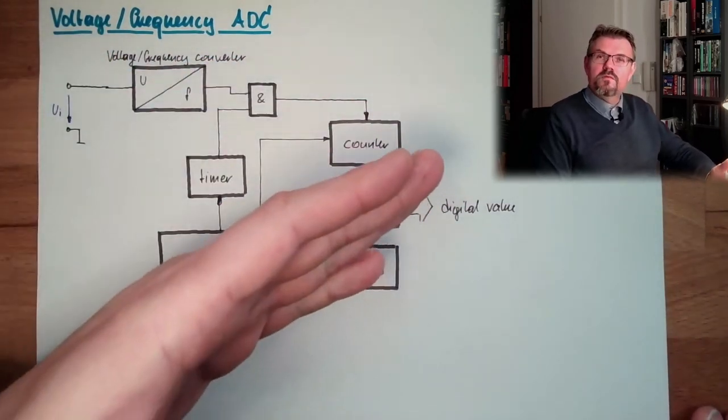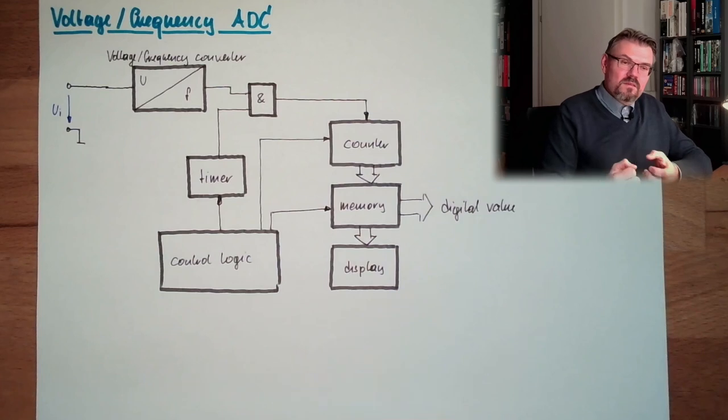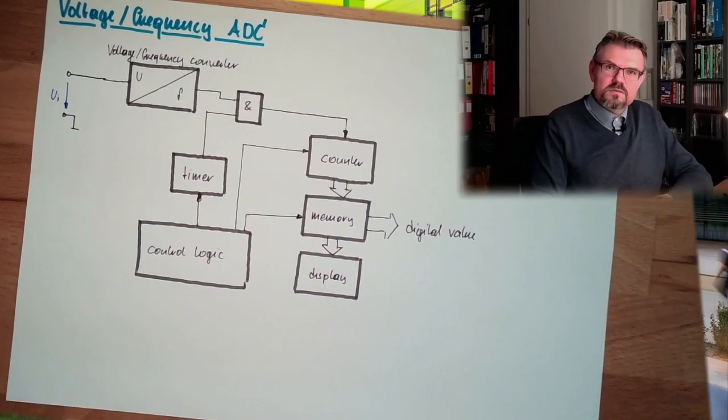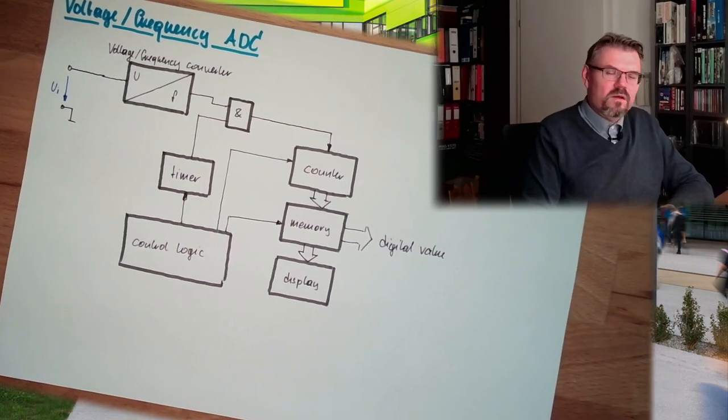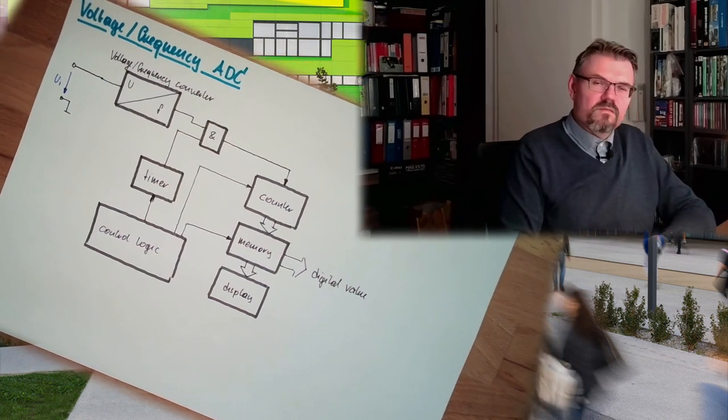The rest is pretty straightforward. We're always counting the same amount of time, so the time needed to get a digital value is always the same. This is very predictable - that's the benefit.